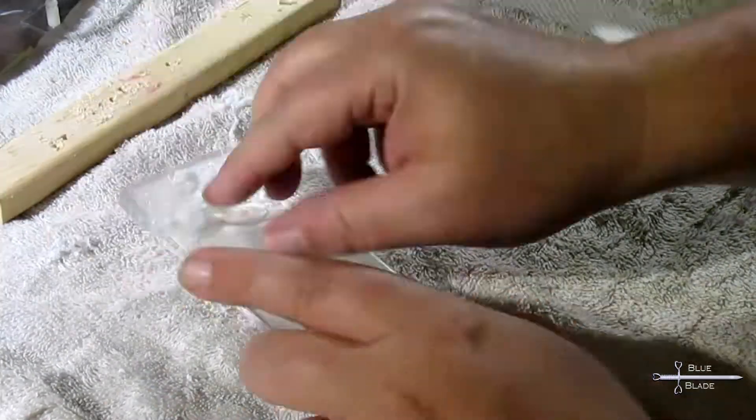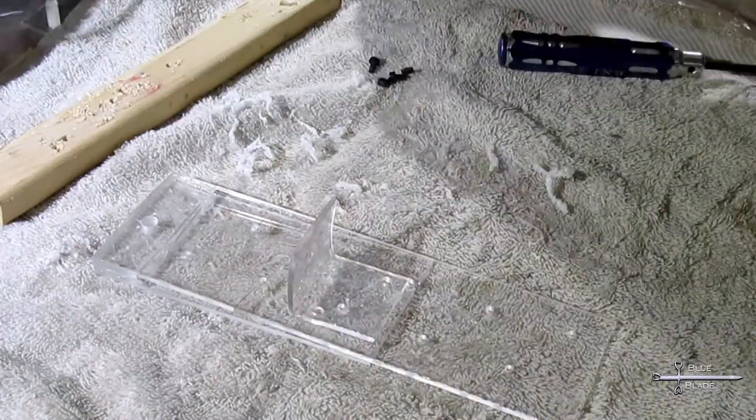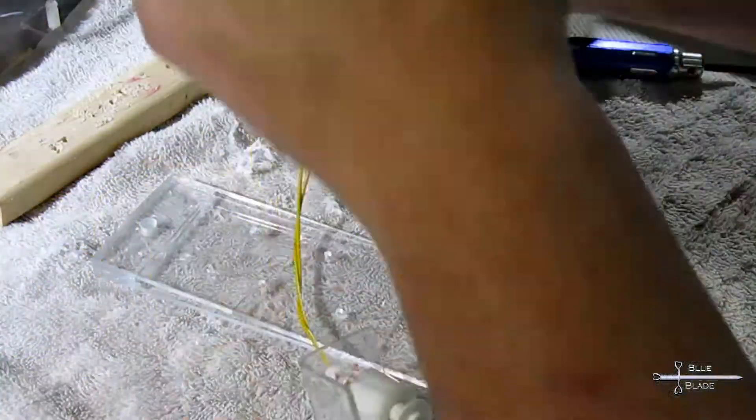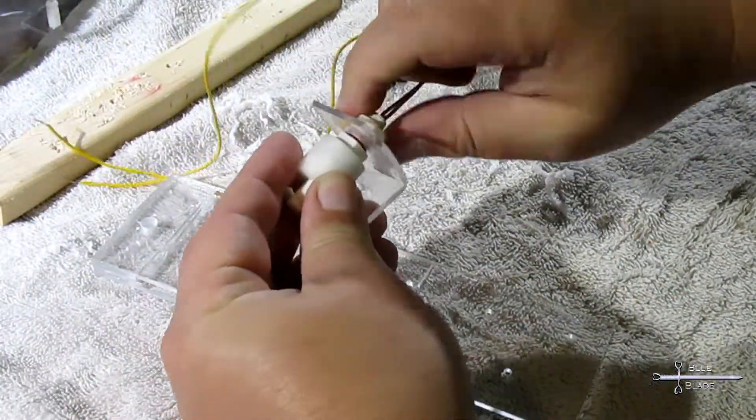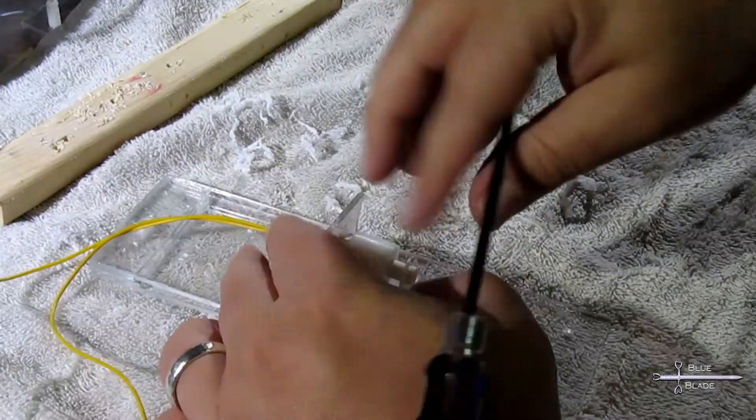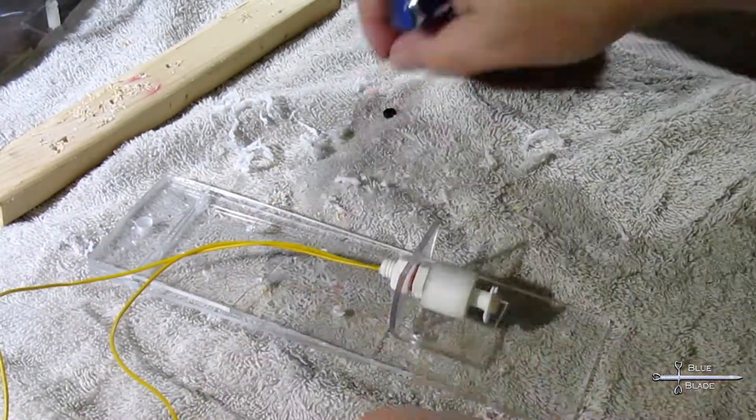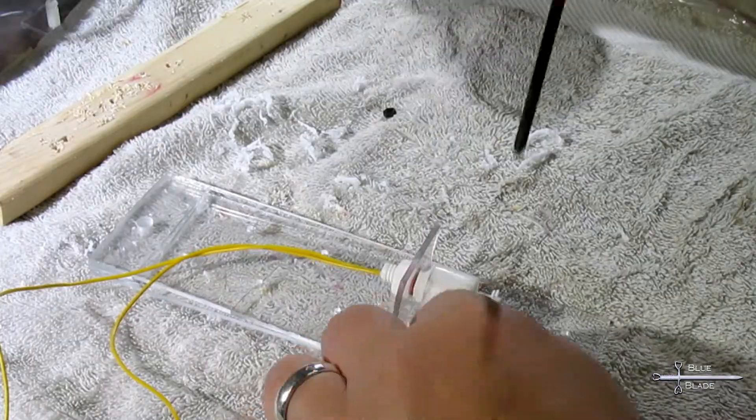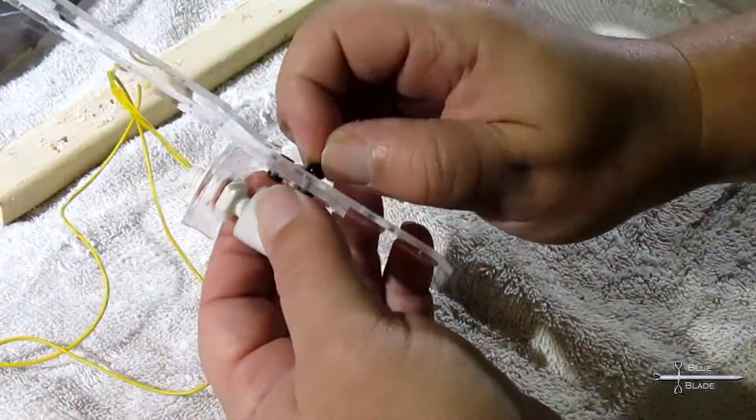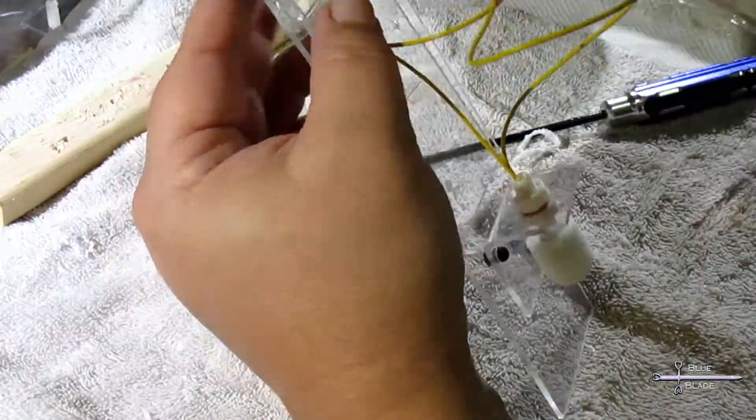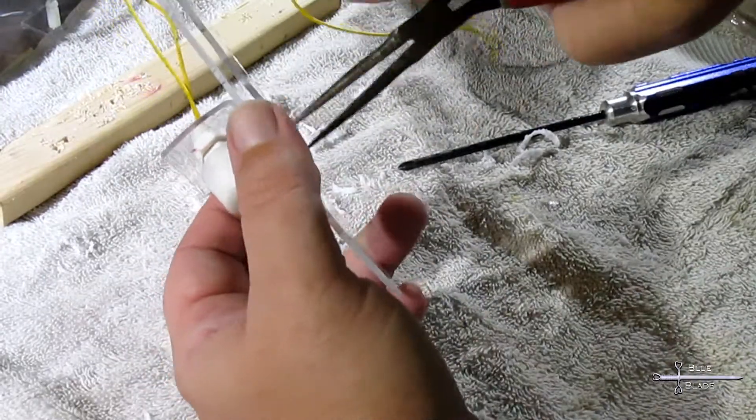First, mount the sensor in the bracket. Feed the locking nut down the wires and tighten it in place. Then use a pair of plastic machine bolts to attach the bracket to the main body and secure them with plastic nuts. Finally, feed the wires up through the hole in the top, and the sensor is ready to be wired in.